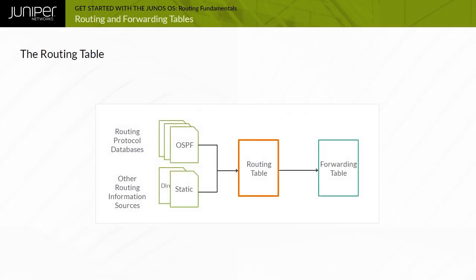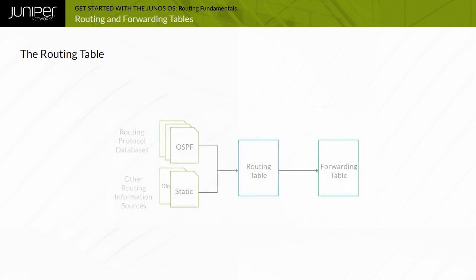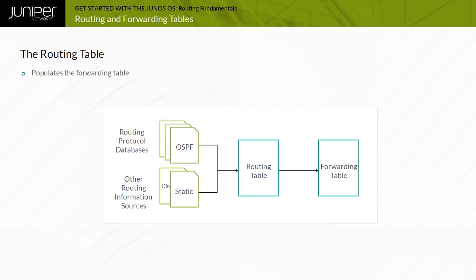The Junos OS routing tables consolidate prefixes — TCP/IP network addresses — from multiple routing information sources, including various routing protocols, static routes, and directly connected routes. When a device running Junos OS receives multiple routes or paths for a given prefix or network, it selects a single route as the active route. With additional configuration, Junos OS supports multiple equal-cost routes. The router uses the active route for each destination prefix to populate the forwarding table.